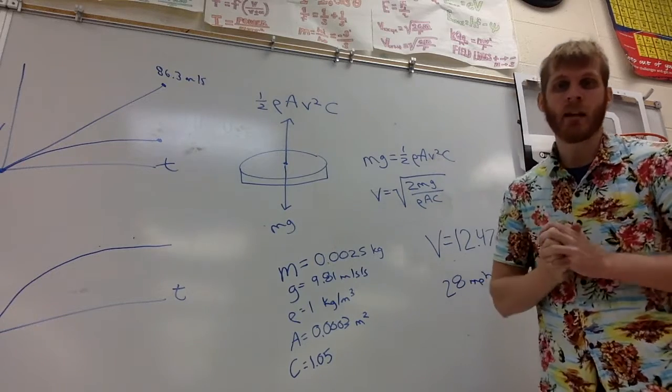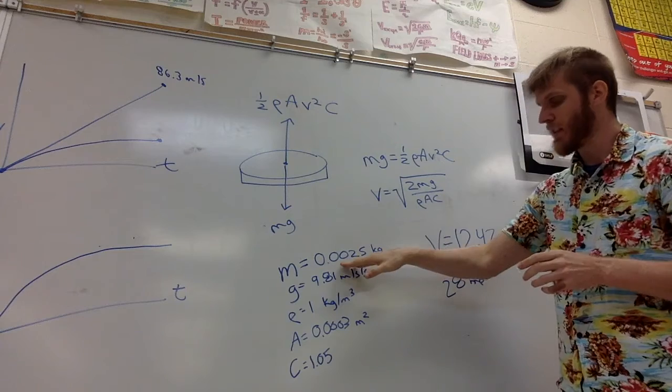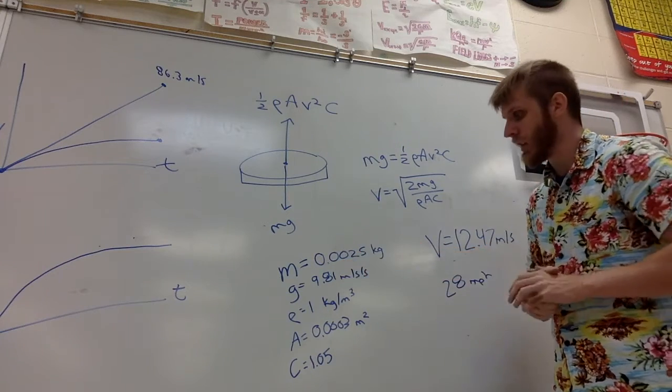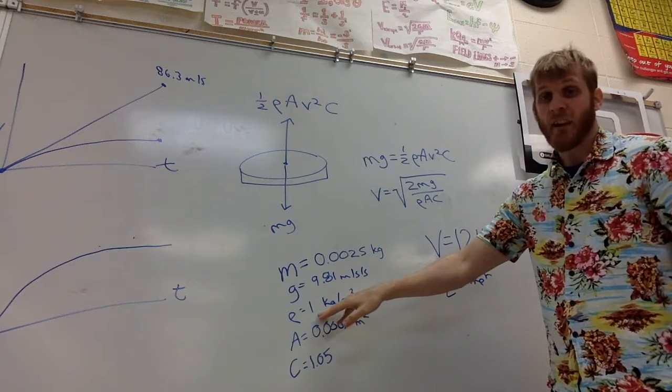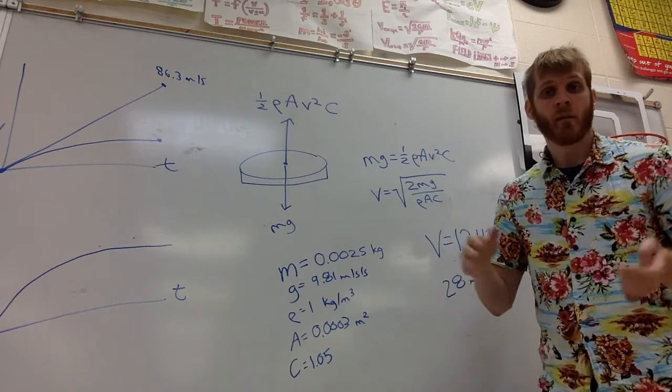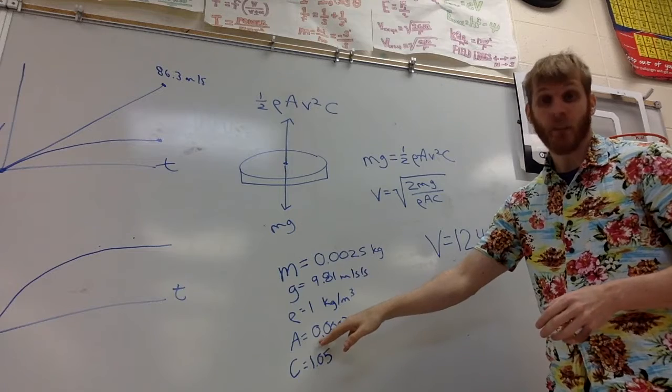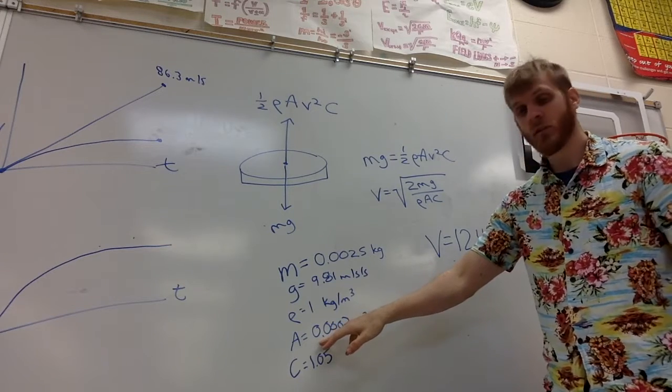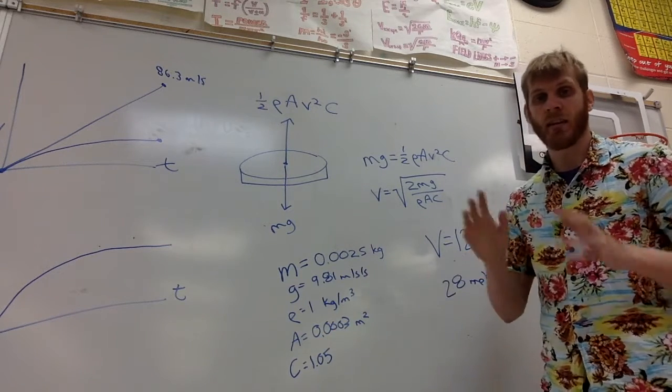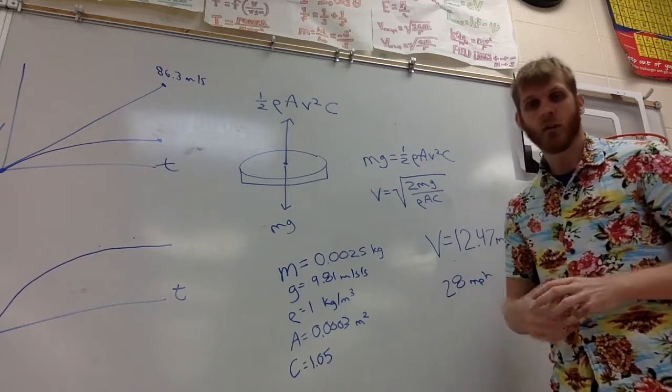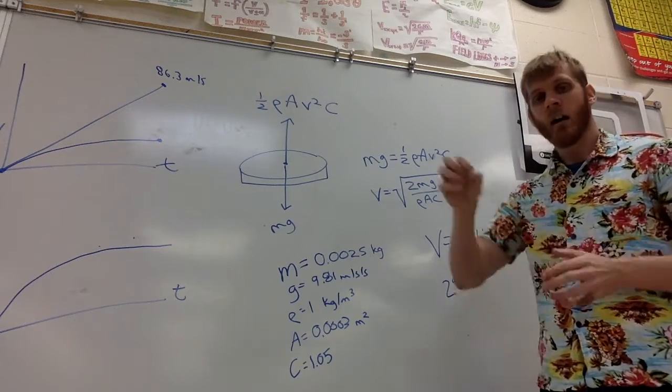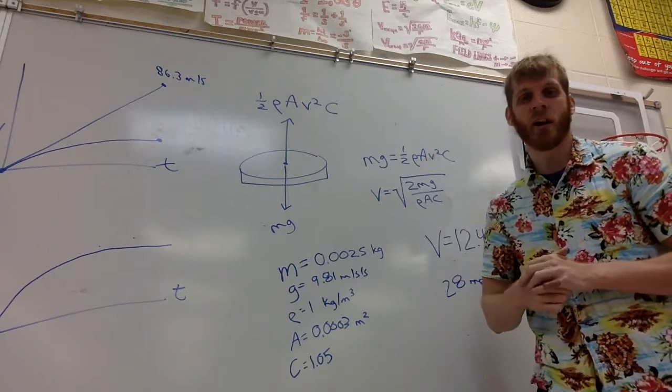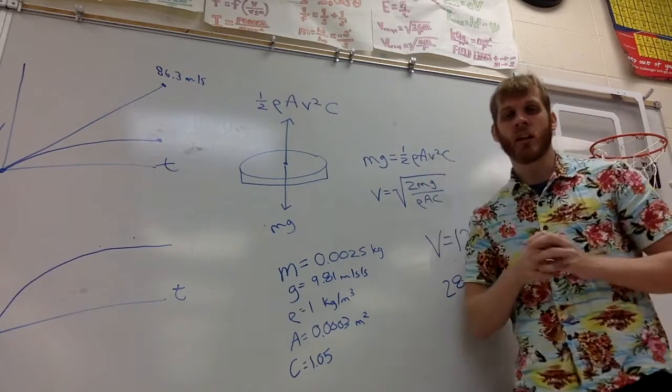Now I looked up the values for a penny. The mass of a penny is 2.5 grams, that converts to kilograms. Acceleration of gravity, 9.81 meters per second per second. Density of air, it ranges, but it's about 1 kilogram per cubic meter. Air, surface area of a penny, very very small, pennies are small, 0.0003 meters squared, and that's rounding the number. And then the drag coefficient you can look up, it's a value for a penny. For a cylinder, it's about 1.05.